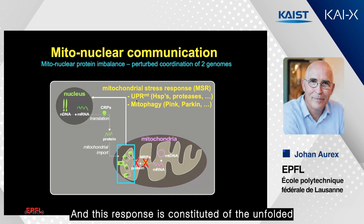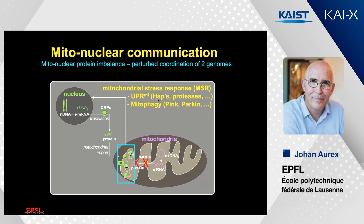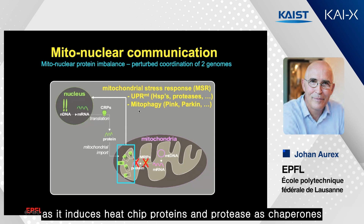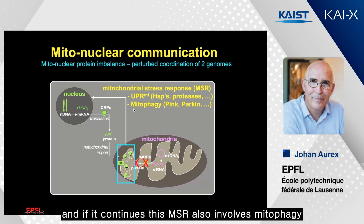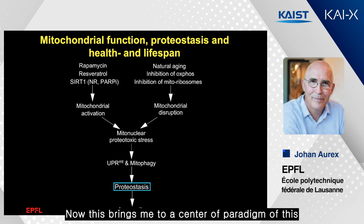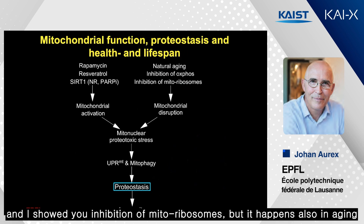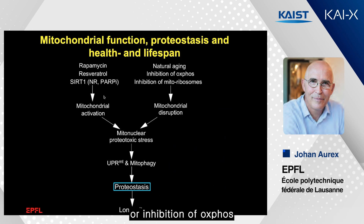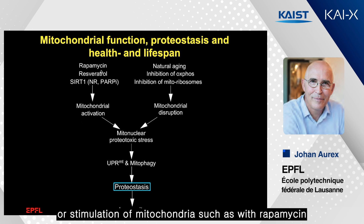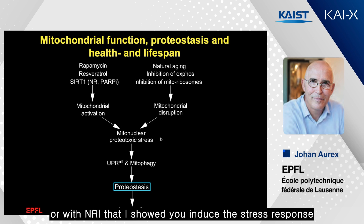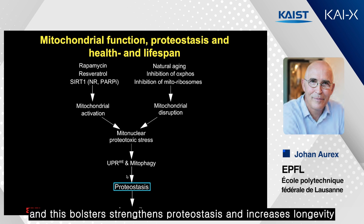This response is constituted of the unfolded protein response of the mitochondria, inducing heat shock proteins, proteases, and chaperones. If it continues, MSR also involves mitophagy, which proceeds via PINK and PARK. This brings me to a central paradigm: both mitochondrial disruption — such as inhibition of mitochondrial ribosomes, which also occurs in aging — and stimulation of mitochondria, such as with rapamycin or NR, induce this mitonuclear proteotoxic stress. This leads to the unfolded protein response and mitophagy, which bolsters proteostasis and increases longevity.